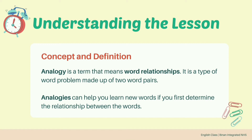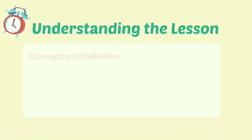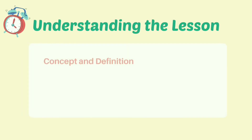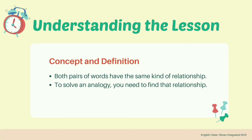Concept and Definition: Analogy is a term that means word relationships. It is a type of word problem made up of two word pairs. Analogies can help you learn new words if you first determine the relationship between the words. Your goal in solving an analogy is to find a word that correctly completes the second pair. The words are always logically related, and both pairs of words have the same kind of relationship. To solve an analogy, you need to find that relationship.